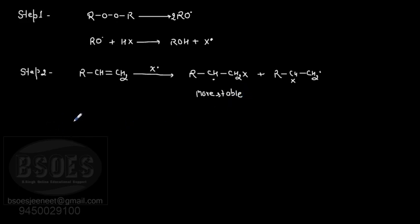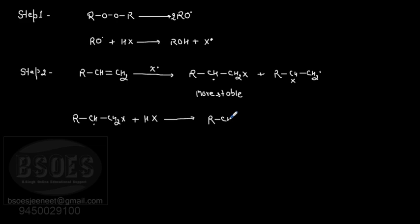The secondary free radical then reacts with HX in the next step, giving R-CH2-CH2-X as the product, and the X free radical is regenerated. This is the complete mechanism of anti-Markovnikov addition of HX in the presence of peroxides.